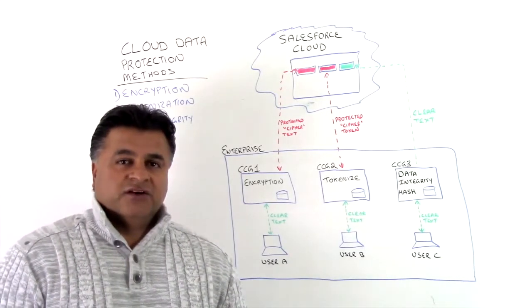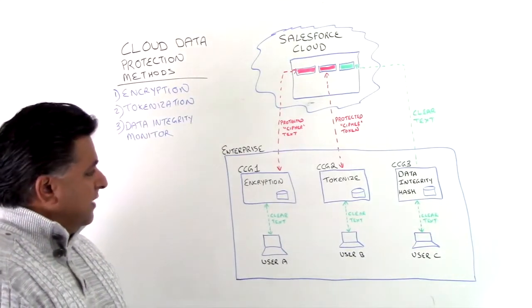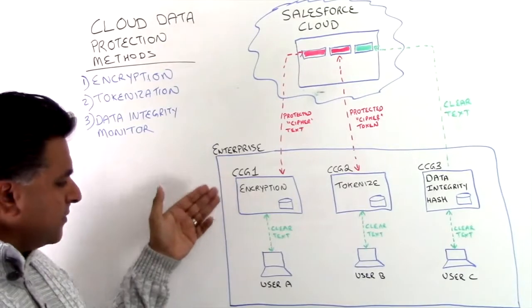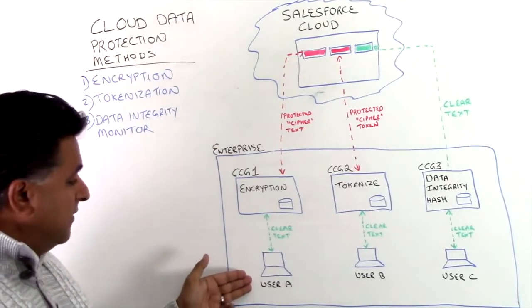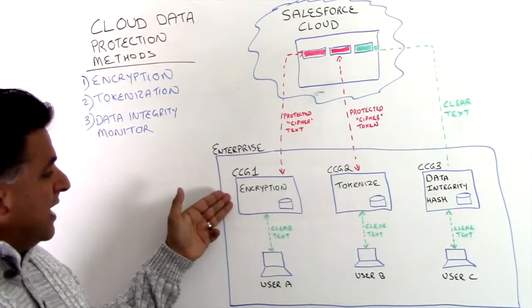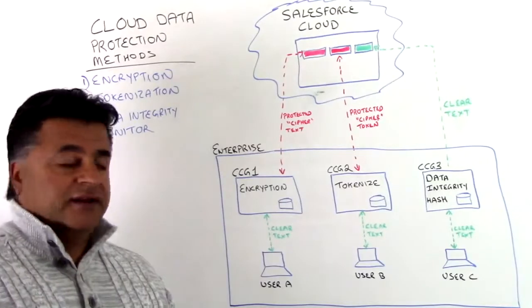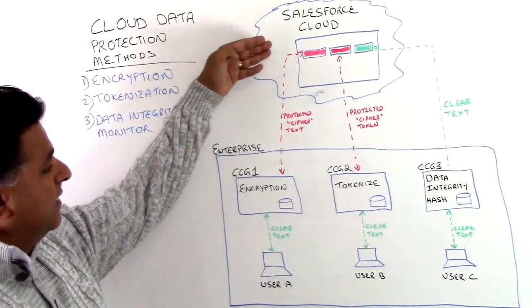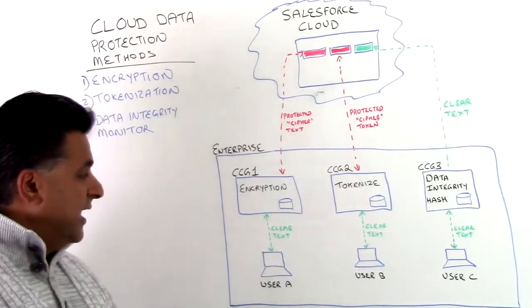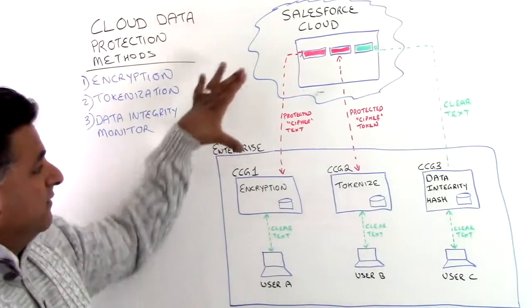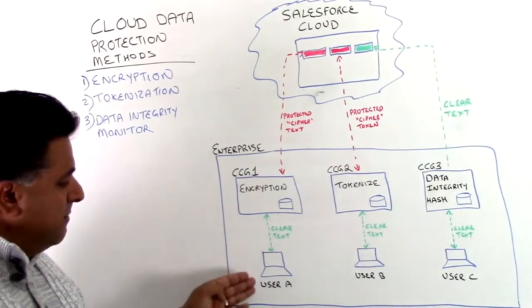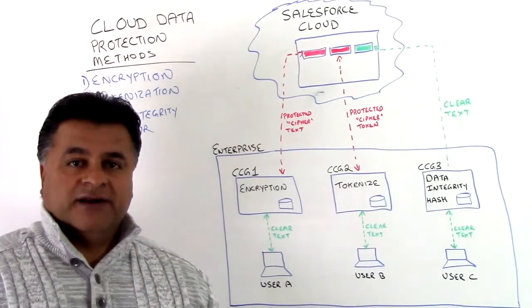Let's touch upon the first one, which is encryption. Here we have an enterprise with a Cypher Cloud security gateway deployed in their infrastructure, and user A is going to enter data into Salesforce. As they enter that data, it goes through the Cypher Cloud gateway and becomes encrypted. What is put into the Salesforce cloud is an encrypted version — what we call protected Cypher Text. When user A wants to view that data, we decrypt it and send it in clear text back to them, so they can go about their daily activity.